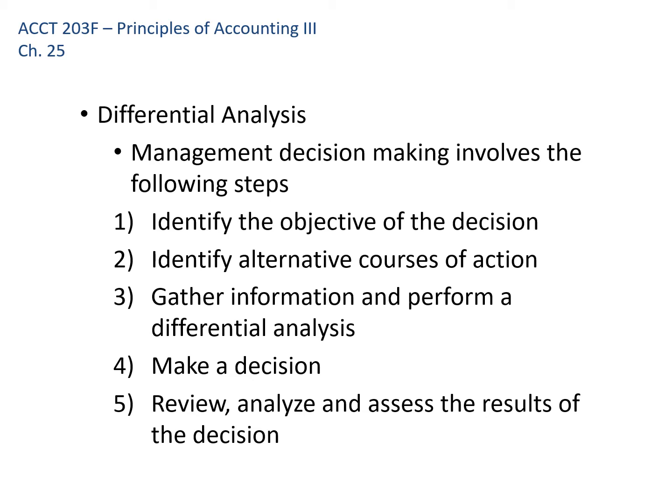A couple of complexities not addressed in this chapter, which would be addressed in a higher-level course, include: investment income earned on cash saved by not pursuing a particular course of action, state and federal tax implications, and opportunity cost — the benefits foregone or missed by not taking a particular decision.